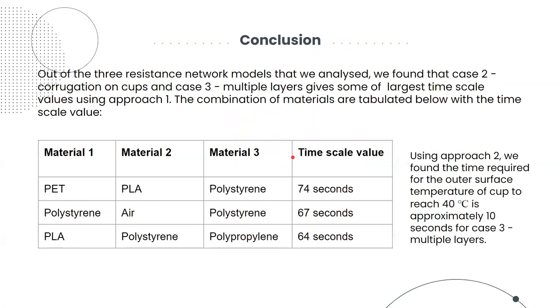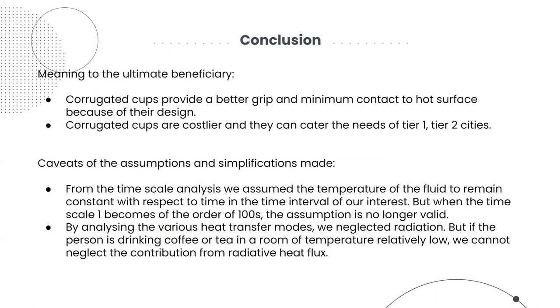For the conclusion part, let's see the conclusion and the results. Out of the three resistance network models that we analyzed, we found out that the corrugations case and the multiple layers case give some of the largest timescale values using approach one, that is the L square by alpha effective approach. And as we can see that the first combination gives the timescale value of around 74 seconds. Also, we see that using approach two, the time required for the outer surface temperature of the cup to reach 40 degrees Celsius is approximately 10 seconds for the multiple layers case. So what does this mean to the ultimate beneficiary? We can say that the corrugated cups provide a better grip and minimum contact to the hot surface because of their design. Also, corrugated cups are costlier and they can cater to the needs of tier one and tier two cities.